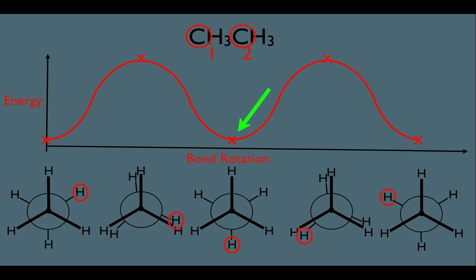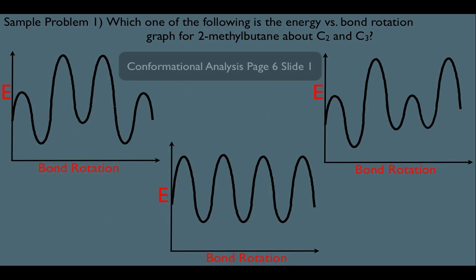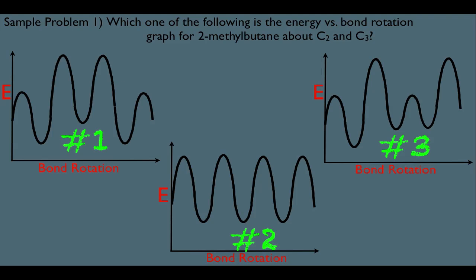So we can see that these graphs are beneficial. But what's a typical problem in organic chemistry concerning this? This question says: which one of the following is the energy versus bond rotation graph for 2-methylbutane about the C2 and C3 bond? If you look closely, graph number 1 is definitely different from graph number 2. Graph 2 looks like our sine graph for ethane, whereas graph 1 is not a sine graph. That's also true for graph 3 — it has various heights and various troughs.